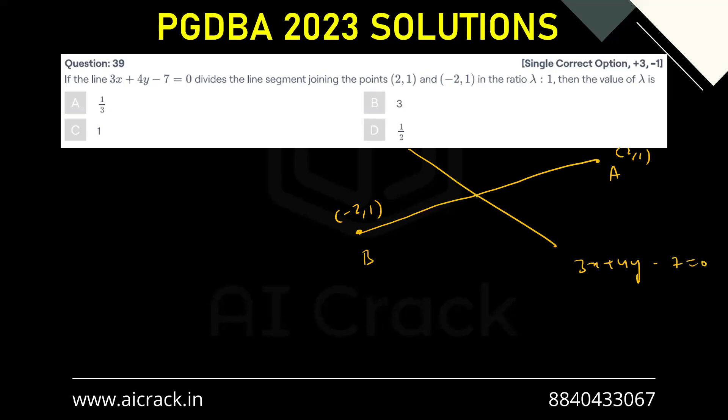And it is dividing this line segment into the ratio lambda is to 1. So let's say this point is (x,y). Now if we use the section formula here, then x would be 1 into 2 plus lambda into minus 2...